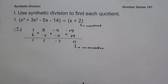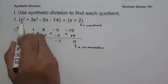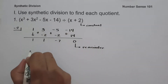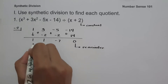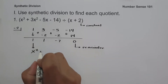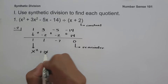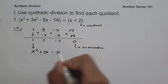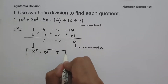To write our answer, we have x cubed divided by x, which is x squared. Then 1, then x, and we have negative 7 as our constant. So the answer is x squared plus x minus 7.